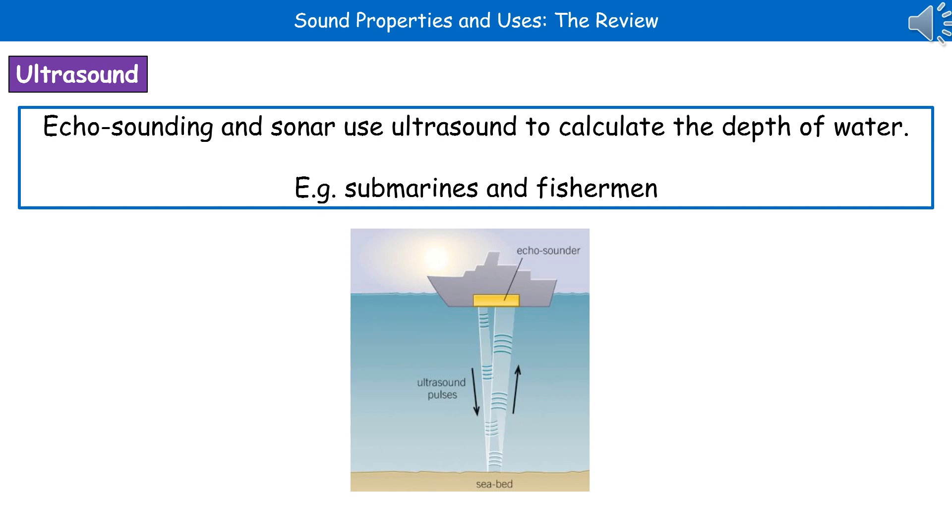The other place that we can use ultrasound is in things called echo sounding or sonar. We're going to use them here to calculate the depth of water, so very useful for fishermen and submarines. They transmit these ultrasound pulses from the ship or the submarine down. As it hits the seabed, it reflects back, and the time it takes then allows them to calculate the distance because we know the velocity.